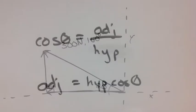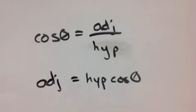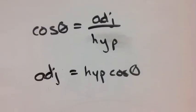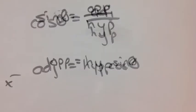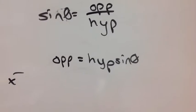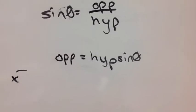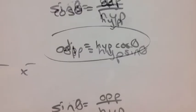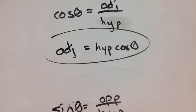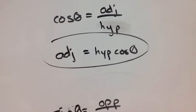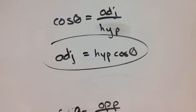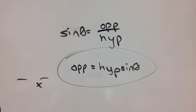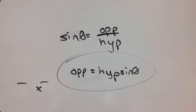Now you need to actually find the components, so you use the cosine — the adjacent over the hypotenuse — and sine, which is the opposite over the hypotenuse. The equations are circled here. The adjacent side is the hypotenuse times the cosine of theta, and the opposite side is the hypotenuse times the sine of theta.